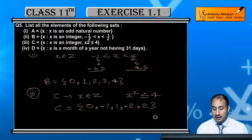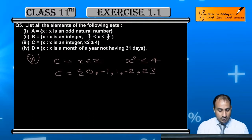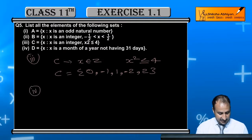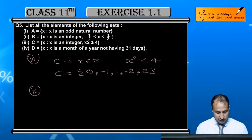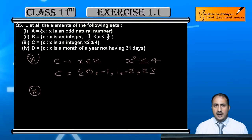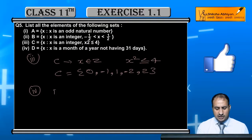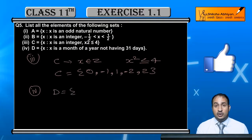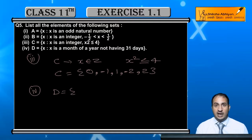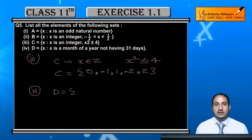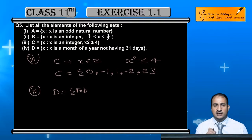Now the last part. In the last part, students, we are asked about months of the year which do not have 31 days. This is straightforward — you can easily answer this. Which months of the year do not have 31 days? January has 31 days so it will not be included. Then February has 28 or 29 days, it is not 31 days.